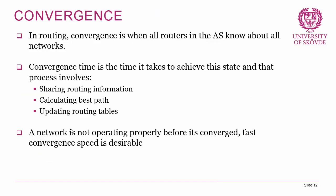The next keyword to discuss is convergence. In routing, convergence is when all routers in the autonomous system know about all networks within the AS. Convergence time is the time it takes to achieve that state, and the process involves sharing routing information, calculating the best path to every remote network, and updating local routing tables. Convergence time is very important because if a network is not converged, the routers will not be aware of all remote networks or the best paths to them. For that reason, fast convergence speed is desirable.